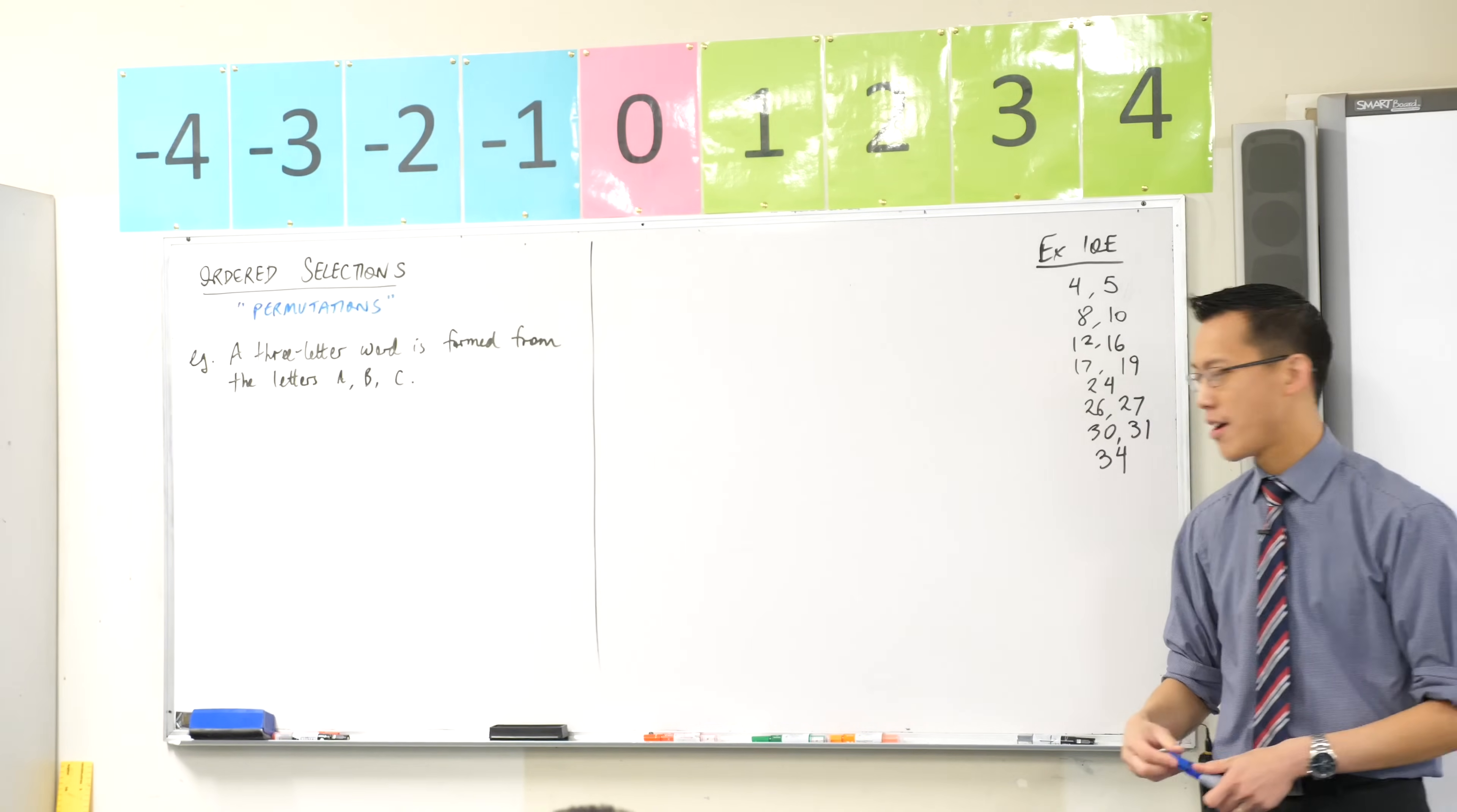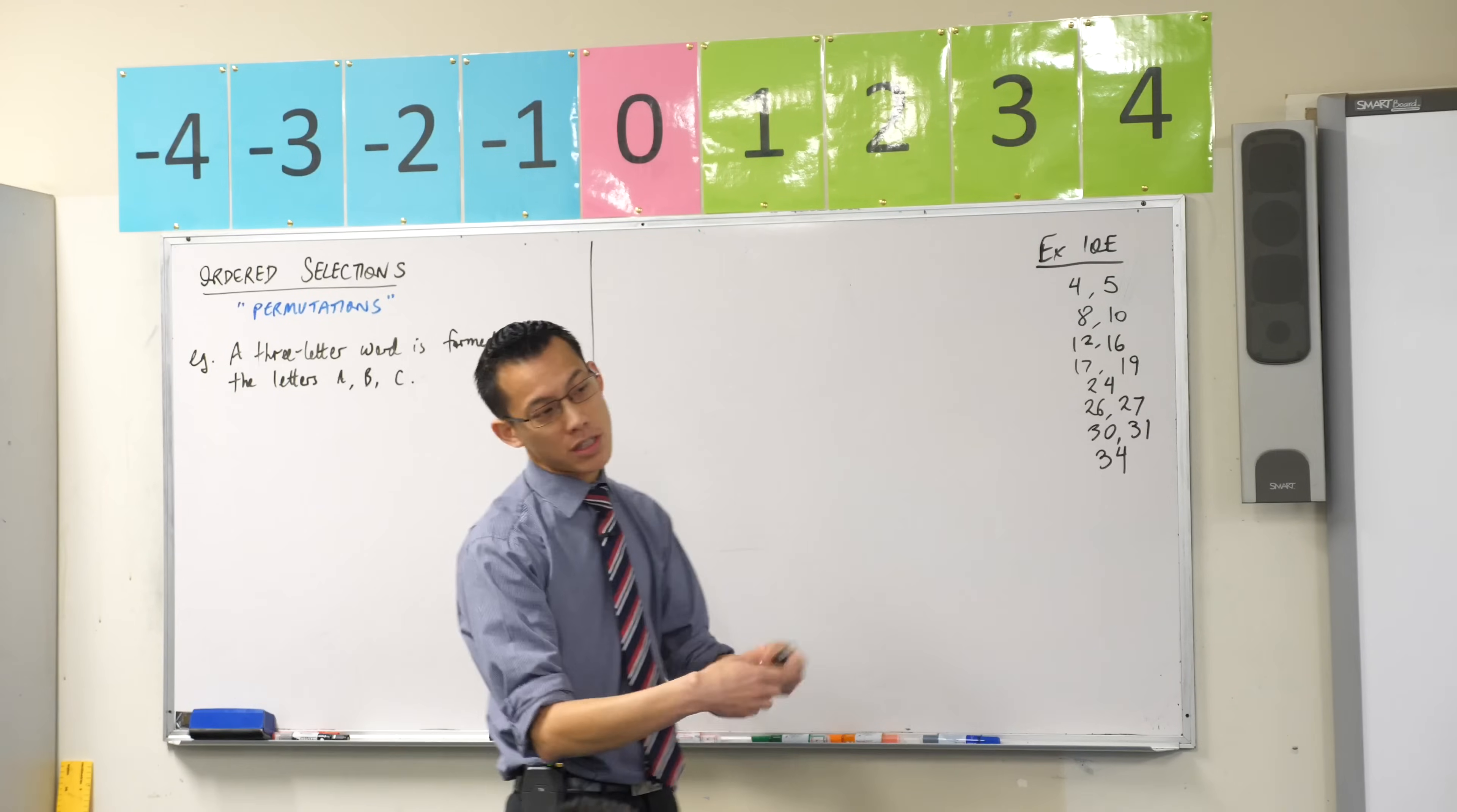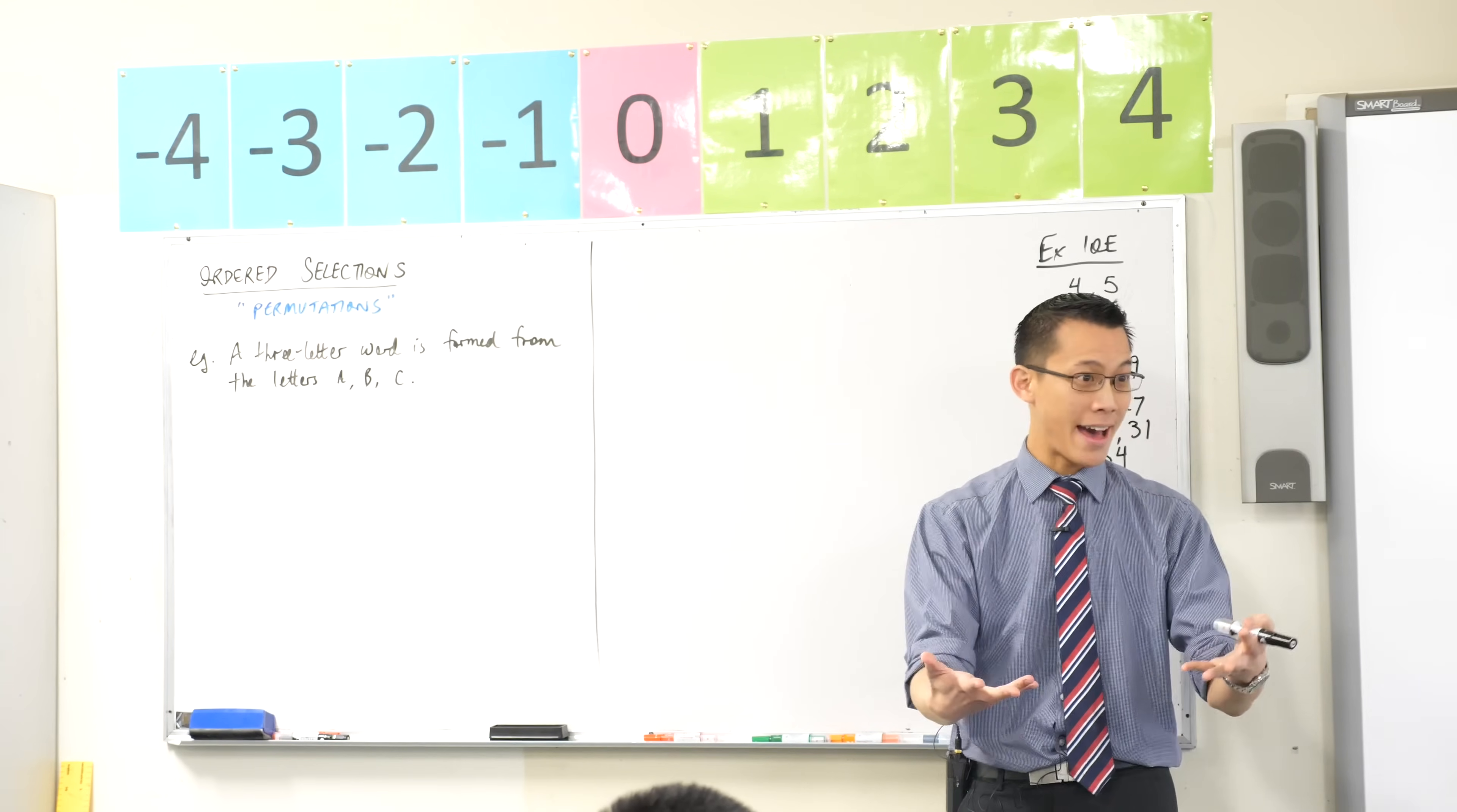So here's where a scenario will begin. And this is the way a probability question would usually begin, right? A three letter word is formed from the letters A, B, and C. And then a probability question would then ask what's the probability that if one of those words were chosen at random that it's A? And then you can make up a condition like what's the probability that the first letter is A? Or the middle letter is A? Or that the letters go in order or something like that, right?